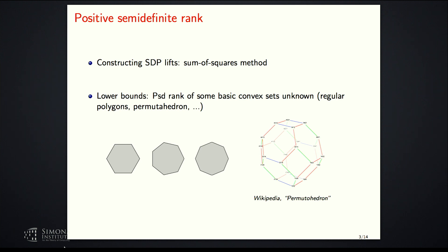The PSD rank of some very basic convex sets is still unknown. For example, regular polygons in the plane — these convex bodies — we don't know what their PSD rank is. Similarly, the PSD rank of the permutahedron, which is the convex hull of all permutations of the vector (1, 2, 3, ..., n), is also unknown.